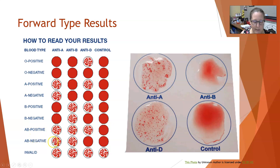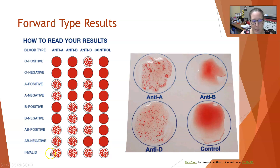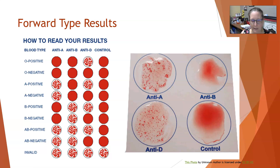For AB negative: they will react with anti-A and anti-B because they're AB and have both A and B antigens on the surface of their red cells, but they would not react with anti-D and the control should be negative because they do not have the Rh antigen. If for some reason you get agglutination in all of the wells including the control well, then your reagents are contaminated — something is wrong. That is considered an invalid test.